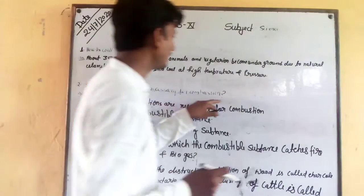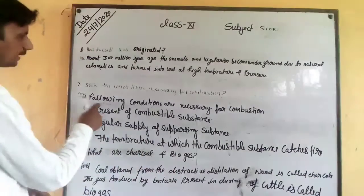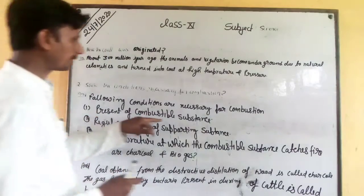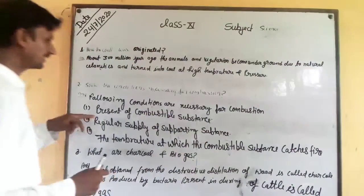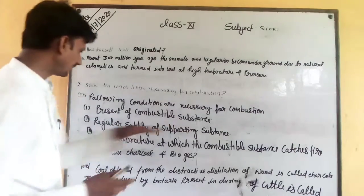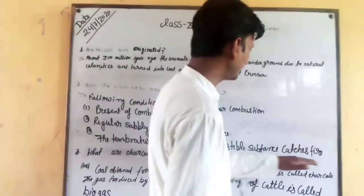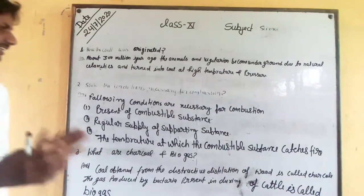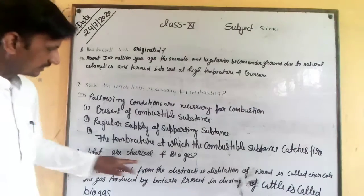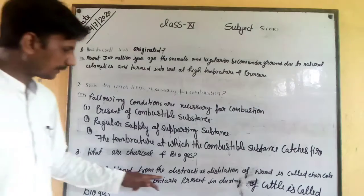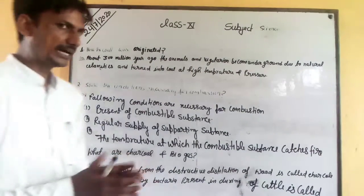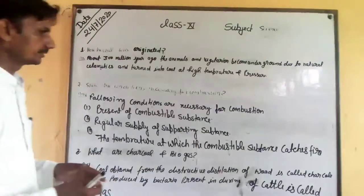The third question is how coal is formed through destructive distillation. Charcoal (chalcol) is the product obtained from the destructive distillation of wood — that is, the coal-like substance produced from wood is called charcoal.